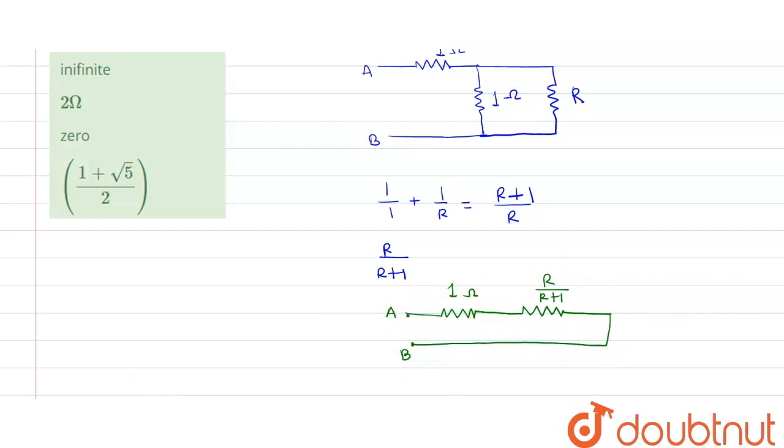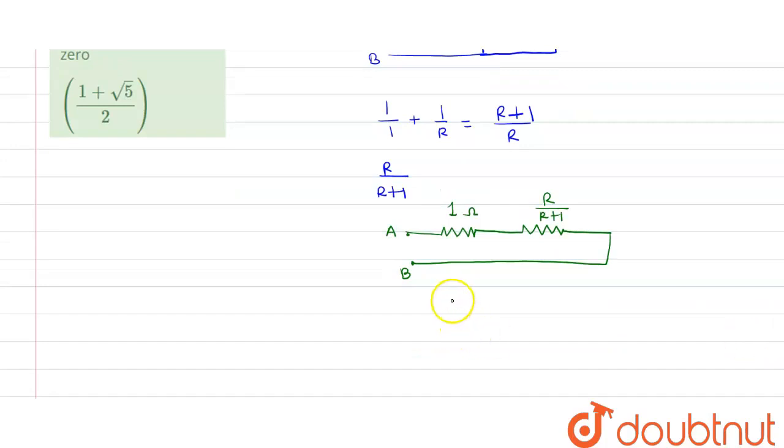So as these two are in series, we can just add them. So 1 ohm plus R upon R plus 1. So this is our equivalent resistance R. It will be equal to 1 ohm plus R upon R plus 1.